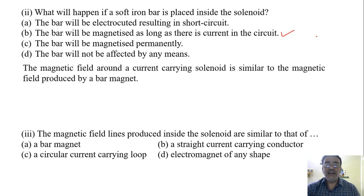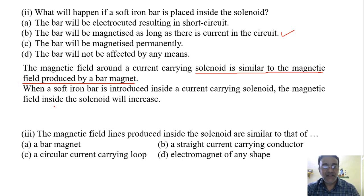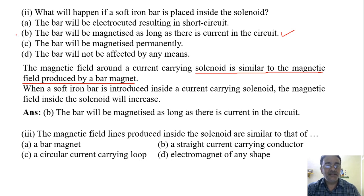So the magnetic field around a current carrying solenoid is similar to magnetic field produced by a bar magnet. It is already given in the context. So when a soft iron bar is introduced inside a current carrying solenoid, the magnetic field inside the solenoid will also increase. Now if we stop the current, then it will decrease and it will become zero. So that is why option B is correct. The bar will be magnetized as long as there is current in the circuit.